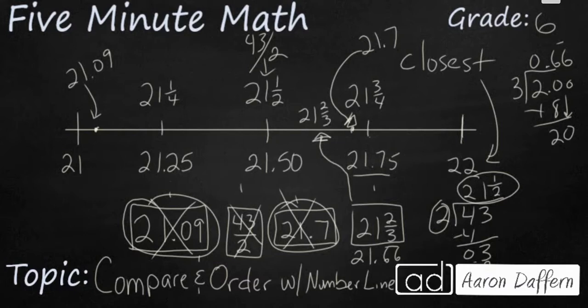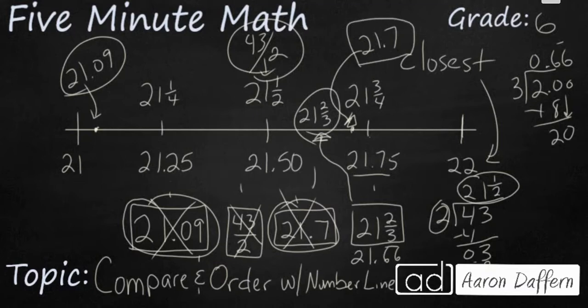So you see our four terms here. Once we have our number line, we split it up a little bit with halves and quarters. We can see that our closest one is actually going to be this one right here, 21 and 7 tenths.